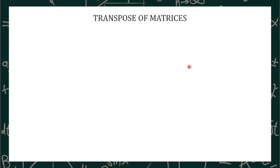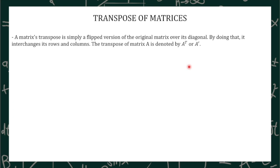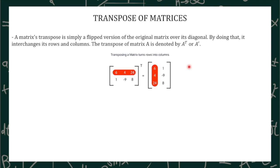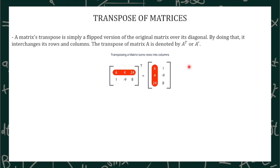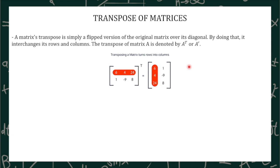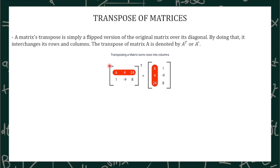Let's now proceed with our transpose of matrices. A matrix transpose is simply a flipped version of the original matrix over its diagonal. By doing that, it interchanges its rows and columns. The transpose of matrix A is denoted by A superscript T or A prime. Transposing a matrix turns rows into columns, meaning the dimension of the matrix will change whenever we transpose it, except if it's a square matrix. For example, if we have a 2 by 3 matrix and we transpose it, it will become a 3 by 2 matrix.